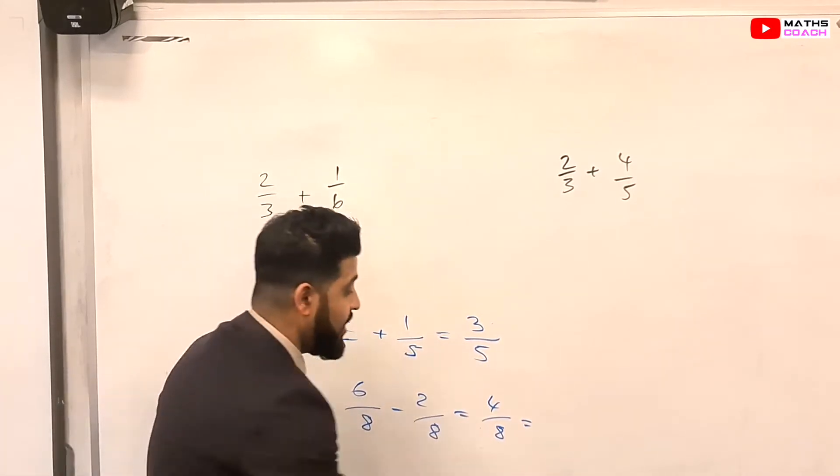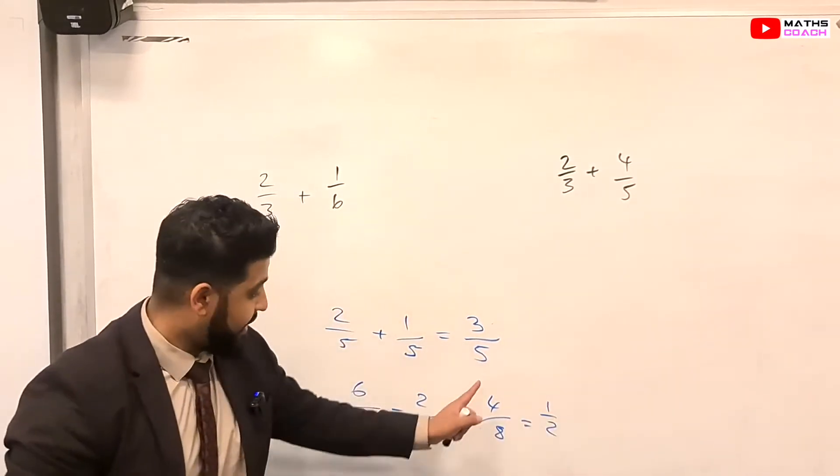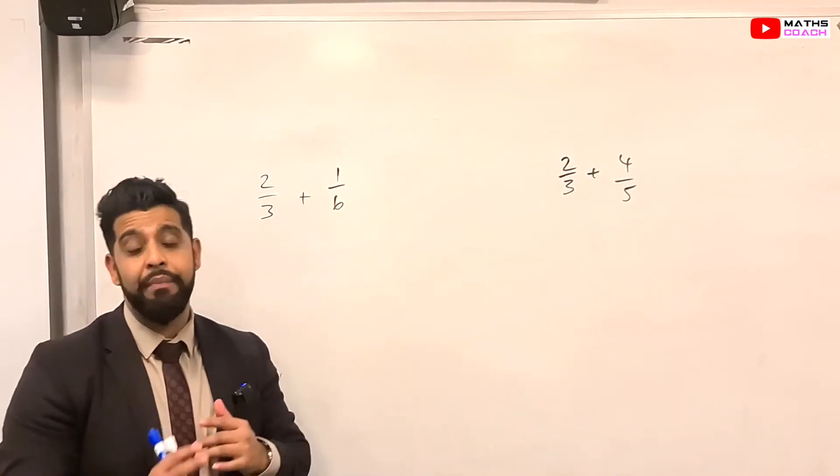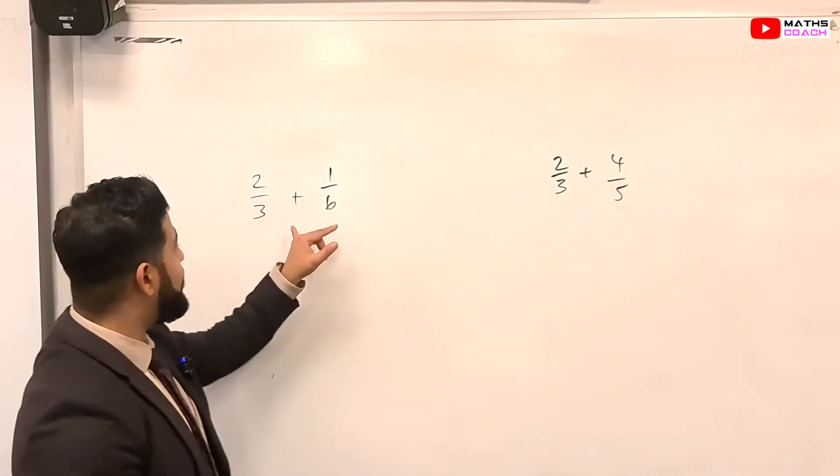And, of course, you can also simplify that, which becomes a half by dividing by 4 on the numerator and denominator. So having seen what happens when the denominators are the same, let's go back and look at this.